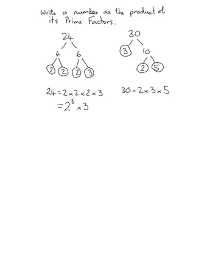Here we've written 24 and 30 as a product of their prime factors and we used a factor tree to get this result. So what we're going to do now is to find the highest common factor and lowest common multiple of these two numbers.